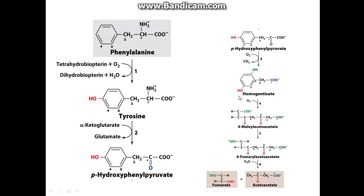O2 goes in and CO2 comes out, giving you homogentisate, where the OH has moved and another oxygen has bonded on, losing the middle carbon. Your O2 comes in and you end up with maleylacetoacetate, which is fumarylacetoacetate — this compound here. That then breaks down to fumarate and acetoacetate. So that is the simple breakdown of phenylalanine and tyrosine.